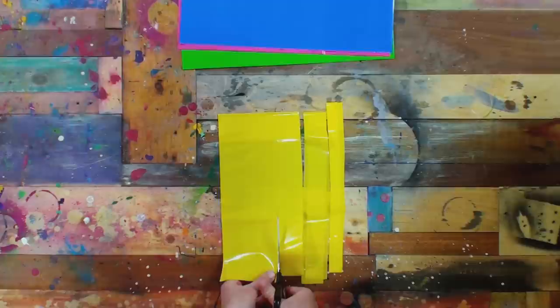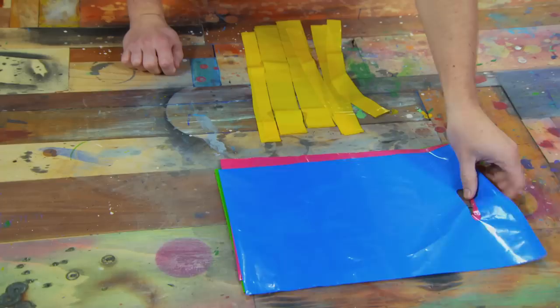Now in order to make the fabric for my kite, I need to cut these other colored bags into strips too. So I'm going to use my ninja skills. There we go, lovely.